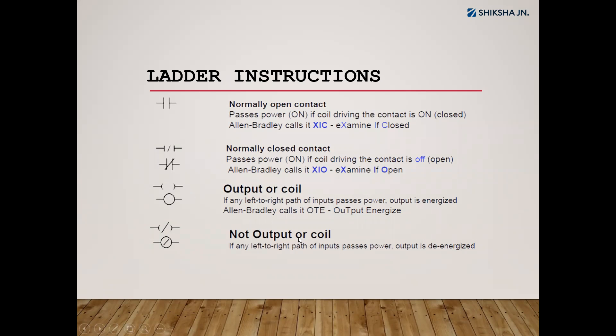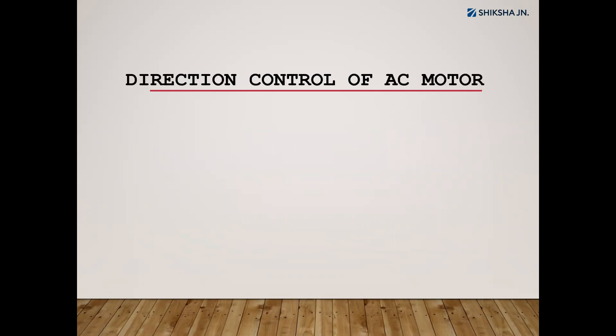Later you will also use the NOT output coil, but that is not required for us right now. These are the three different symbols mostly used in PLC ladder programming. Now coming to the case study — today we are discussing direction control of an AC motor, which is a common application in every industry, found in conveyor systems, pumping systems, and basic cutting tools.